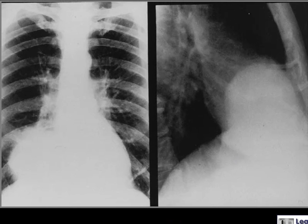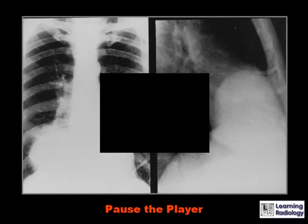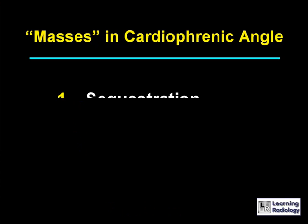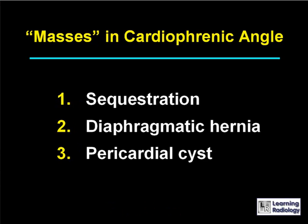Here's the next differential. The differential is for masses in the cardiophrenic angle. There are three causes. The causes of an apparent mass in the cardiophrenic angle include a sequestration, diaphragmatic hernia, or pericardial cyst.